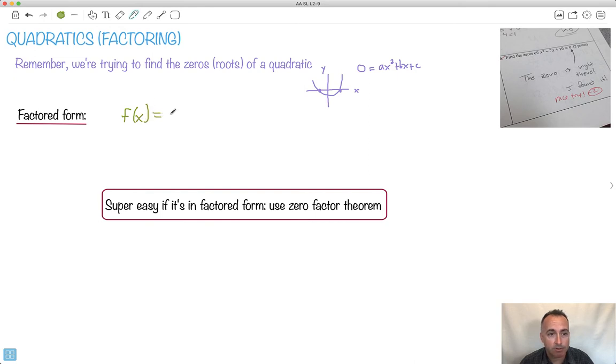So factored form could be something like this, like a times x minus p times x minus q. Let's just sort of make it generic here. A could be anything, p is something, q is something, it doesn't really matter. Basically get it in terms of something times something times something. This is the IB's official factorized form. Now you don't get this on your formula booklet. You don't really need to know it exactly in this form.